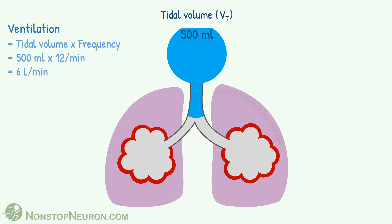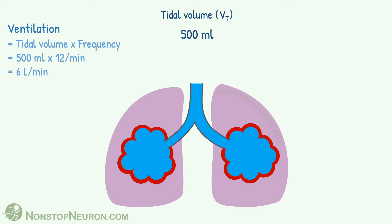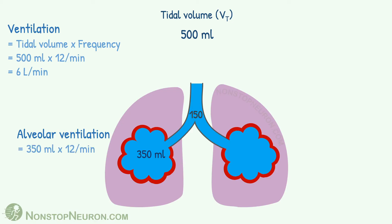Out of the 500 ml of air that we breathe in, 350 ml reaches the alveoli and 150 ml stays in the conducting airway. Alveolar ventilation is the amount of fresh air entering the alveoli every minute. So, multiplying 350 ml by 12 breaths per minute gives an alveolar ventilation of 4.2 liters per minute.